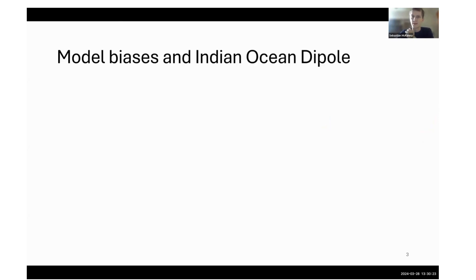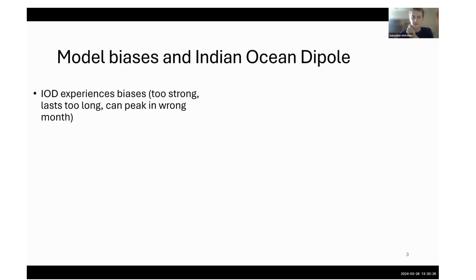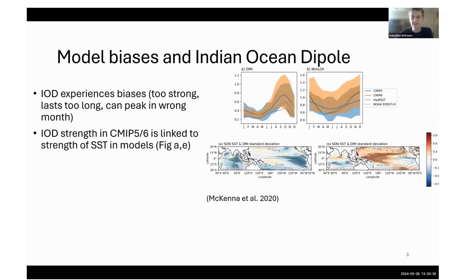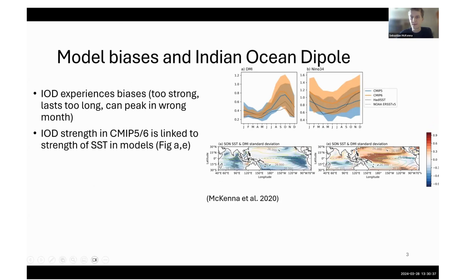Model biases impact things like the Indian Ocean Dipole. In both CM5 and CM6, the IOD is too strong and peaks in the wrong month. Some analysis using inter-model correlations showed that IOD strength is linked to the strength of SST in models. Blue in these plots indicates models with cool SST have a stronger IOD, and red, where models have a warm SST in that region, also have a stronger IOD.